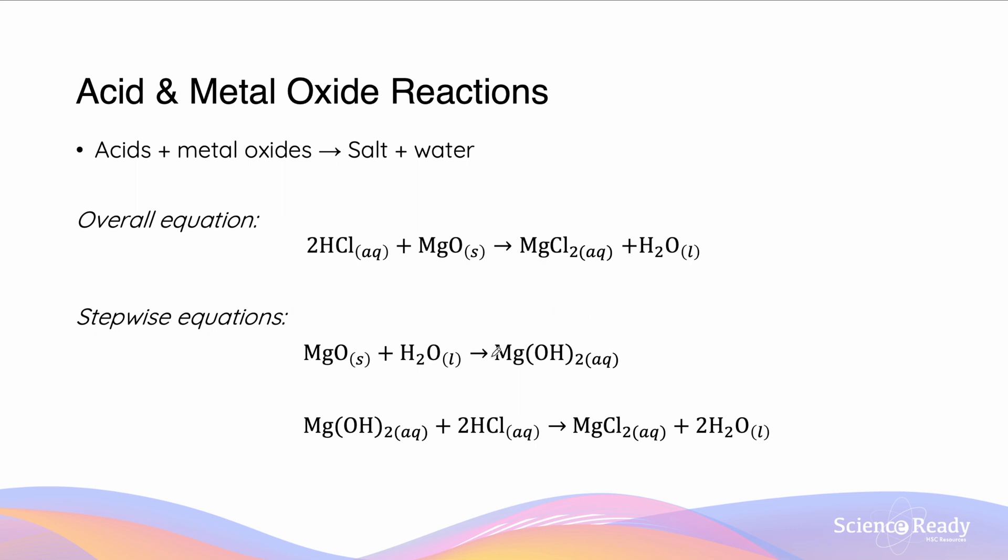For our stepwise equations, what's happening is at the beginning the magnesium oxide is reacting with water to form magnesium hydroxide. Magnesium hydroxide then, like with the sodium hydroxide, is going to react with the hydrochloric acid to produce magnesium chloride and water.